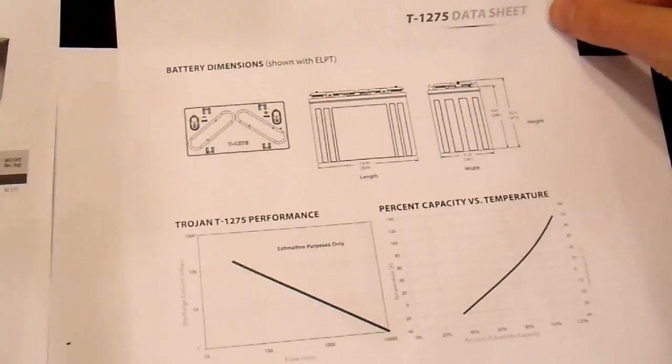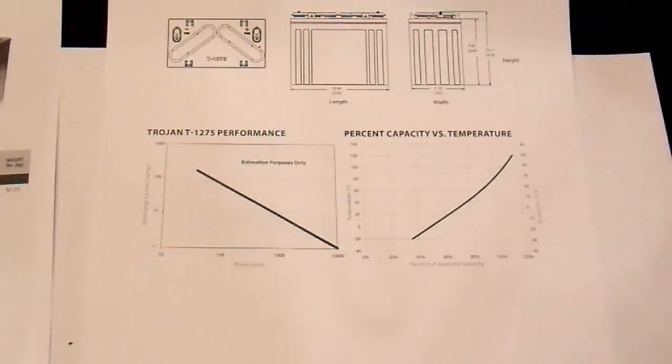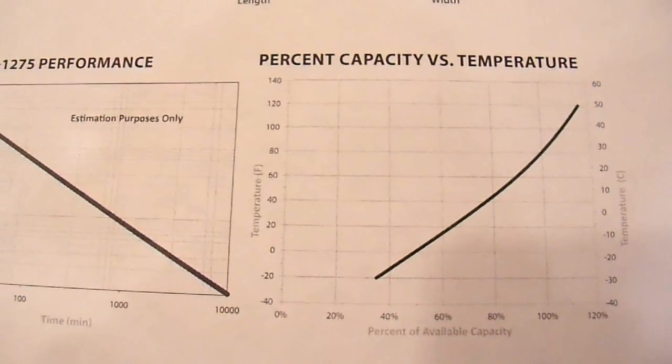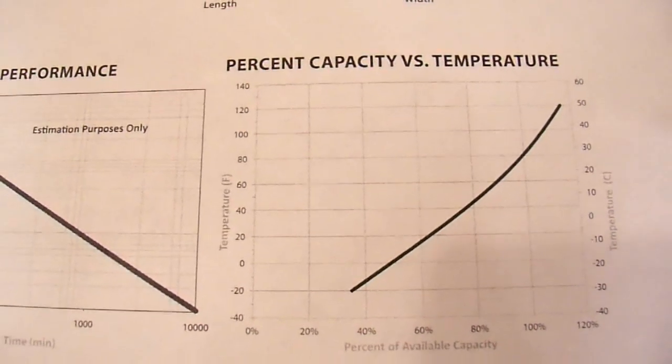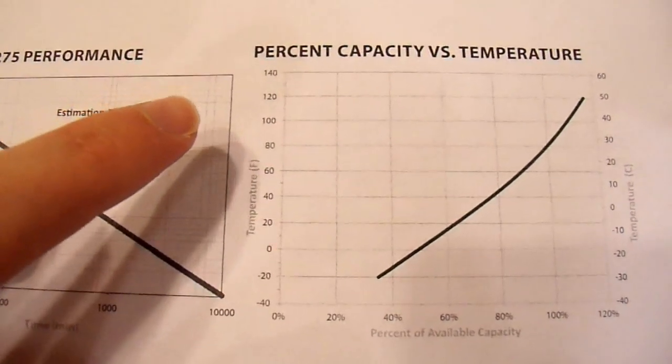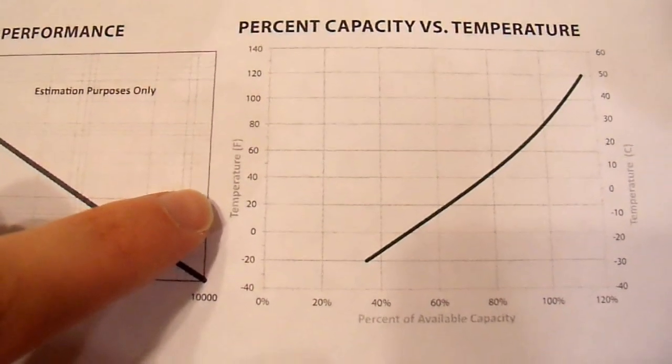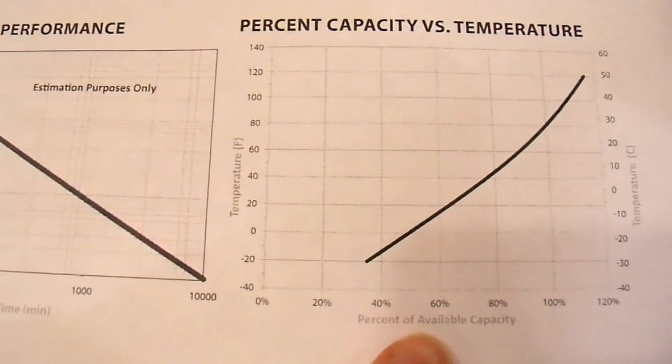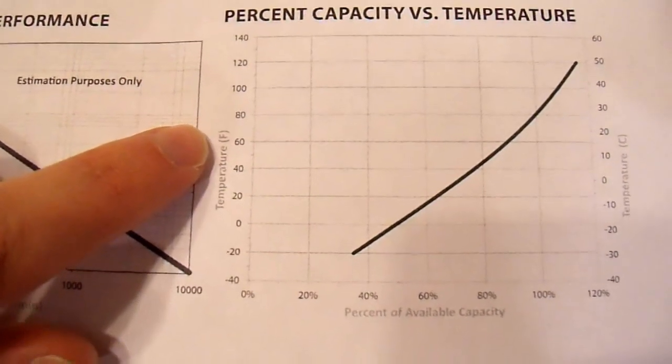And also, I want to note this other graph. I don't know if you can see it or not, so I'm going to get closer. Here they have a graph on the next page of the data sheet of percent capacity versus temperature. And this would seem to directly contradict what I'm trying to say here. Percent of available capacity versus temperature. I mean, how much more direct can you get than this?